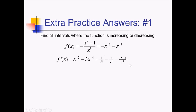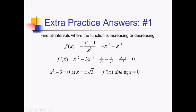Now I will set this equal to 0 and solve. This is going to equal 0 if my numerator equals 0, which happens at plus or minus radical 3. That'll zero this thing out. But also this function is undefined — DNE — at x equals 0. So those both count as critical values that I have to test around when I'm doing my sign analysis.